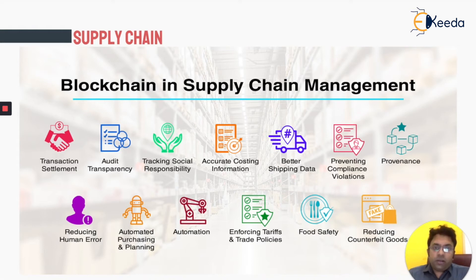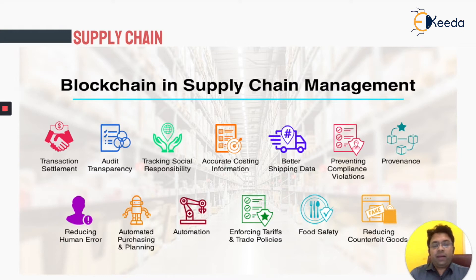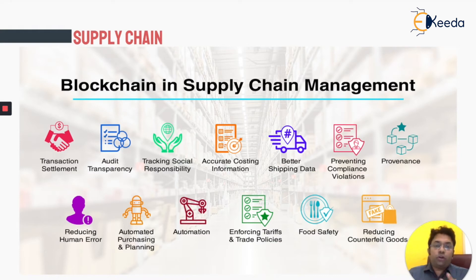In the supply chain world, movement of goods from the US to India doesn't follow a direct route. It travels through the seas, goes to Africa, where goods are gathered or distributed among different ships, then comes to Sri Lanka and then to India. So there are a lot of intermediaries and authorities involved in this supply chain management at a global scale.